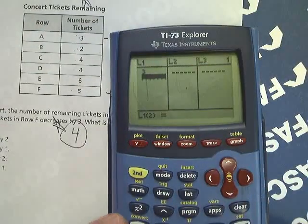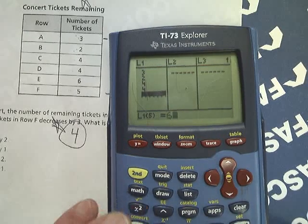So I'm going to type in the terms in the original set: 3, 2, 4, 4, 6, and 5.